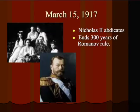Three days after this provisional government is put into place, the Tsar of Russia, Tsar Nicholas II — who was related to Queen Victoria of England and also related to the current King of England at the time, George — is forced to abdicate the throne in Russia. He no longer has control, he no longer has the support of the people of Russia, and he certainly does not have the support of his government or military.